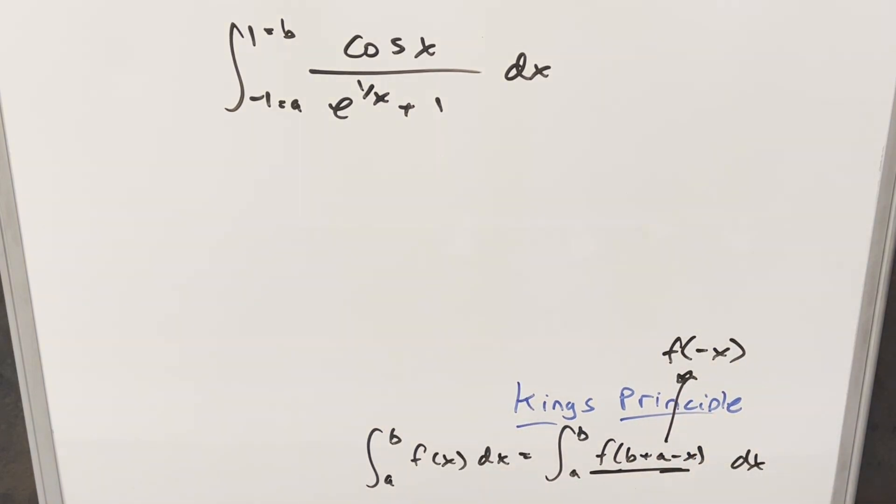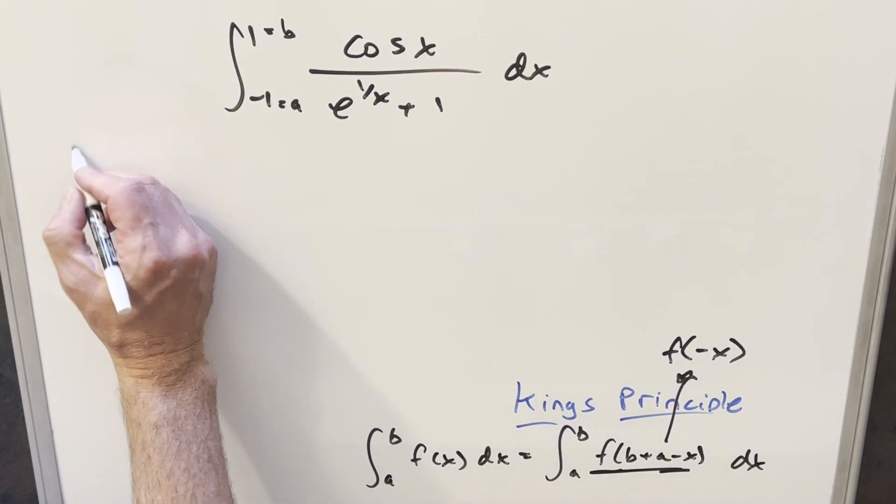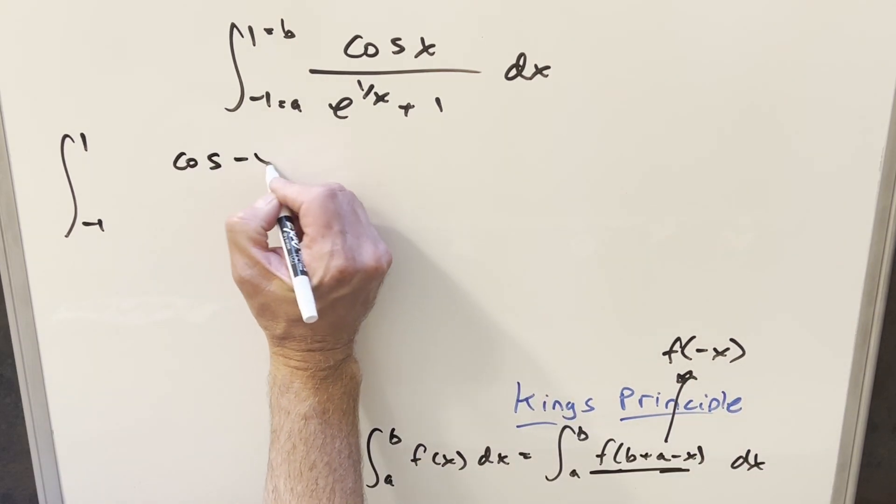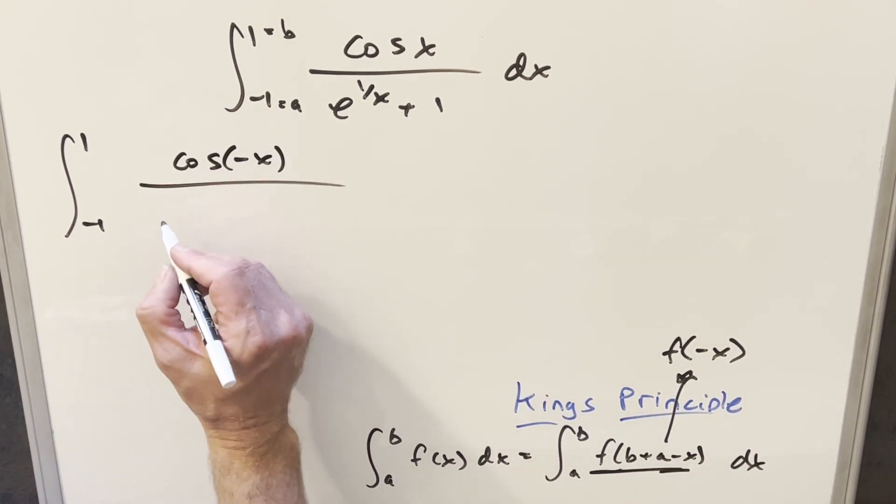So going in with this formula, what's going to happen is our bounds stay the same with this. So we're going from minus 1 to 1. Then plugging in a minus x, we're going to have, this is going to become cosine minus x e.